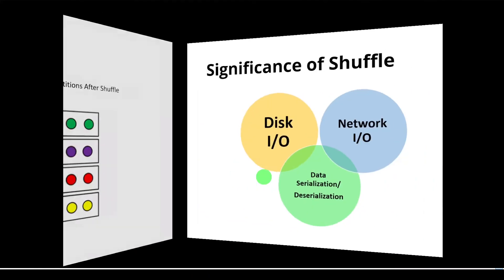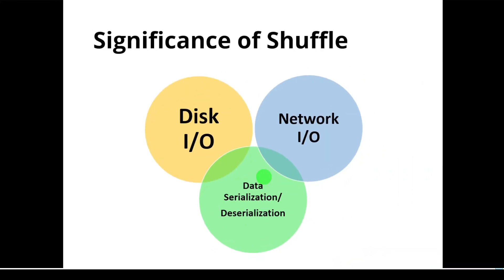What is the importance of shuffle? Shuffle is one of the costliest operations in Spark development, so it's very important to give attention to shuffling parameters. Shuffle involves a lot of disk input output operations and network input output operations, and also it leads to data serialization and deserialization. These are the factors hitting the performance in any Spark application. That is the reason we have to choose the right shuffling parameter.